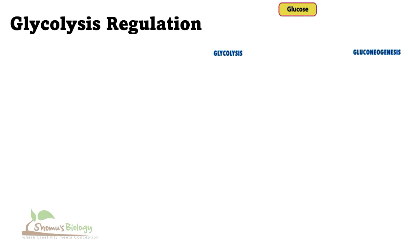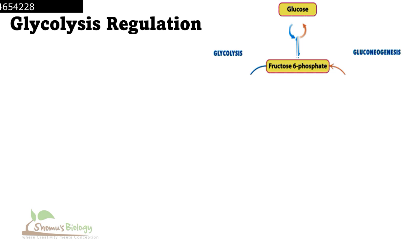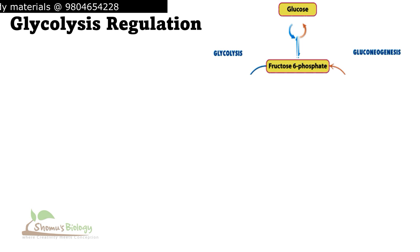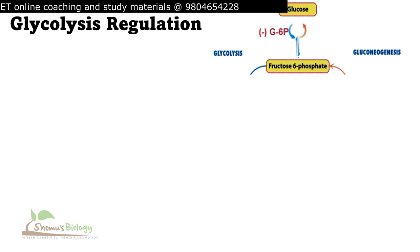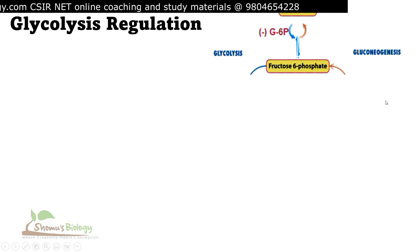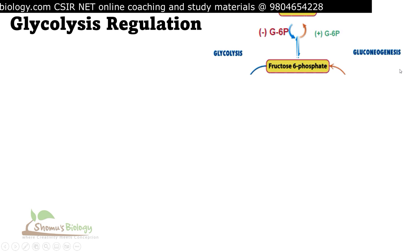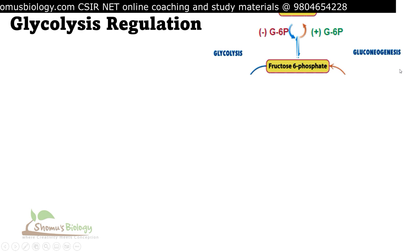For glycolysis, glucose is converted to glucose-6-phosphate by attaching a phosphate group to the sixth carbon. Then glucose-6-phosphate is converted to fructose-6-phosphate. In this first process, glucose-6-phosphate as a product inhibits its own formation from glucose — product inhibition. While in gluconeogenesis, glucose-6-phosphate positively influences the reaction because it acts as a substrate there.